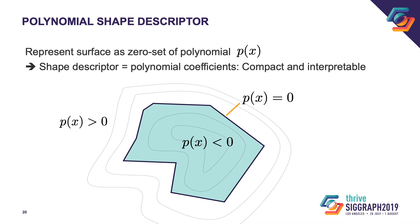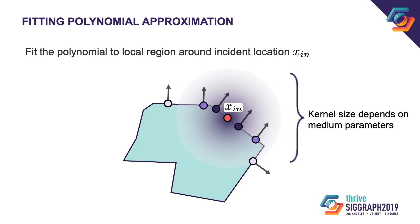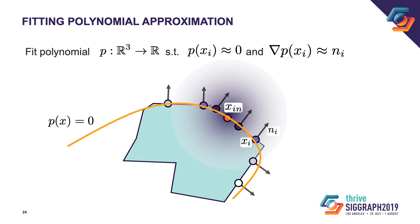This descriptor is compact — just a few floating point numbers — and interpretable, since we can always inspect the surface represented by the polynomial. The polynomial is fit per incident location by fitting it to points on the surface around that incident location. Since subsurface scattering is a localized effect, we only care about the polynomial accurately representing geometry in close vicinity of the incident location. The size of the fitting kernel is determined from the medium parameters — smaller for denser media and larger for thinner media. The polynomial is fit such that its values on surface points are close to zero and its gradient roughly matches the surface normal. This fitting procedure is very similar to the moving least squares method used in geometry processing.